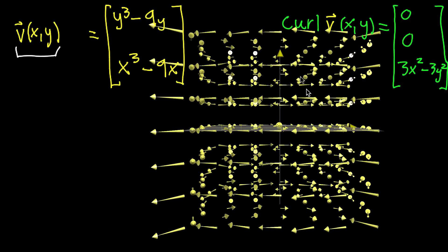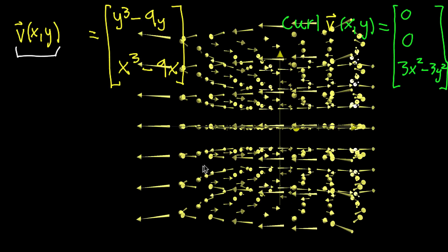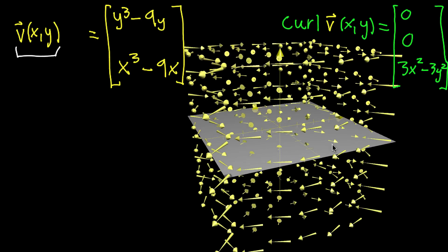And even though there's only, what, like six or seven slices displayed here, in principle you're thinking that every one of those infinitely many slices of space has a copy of this vector field.